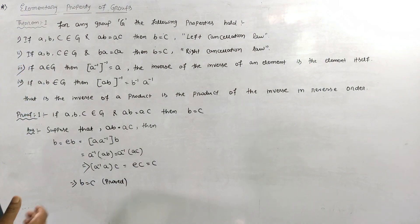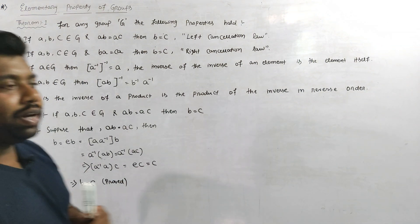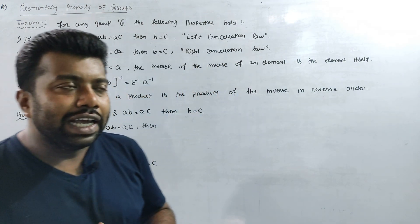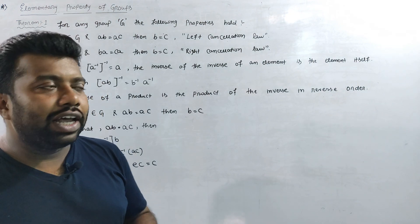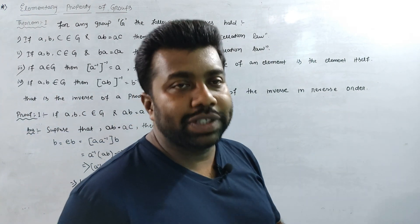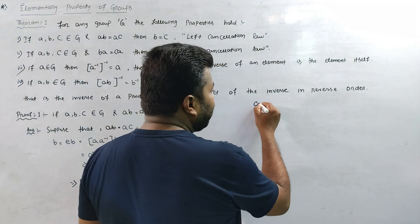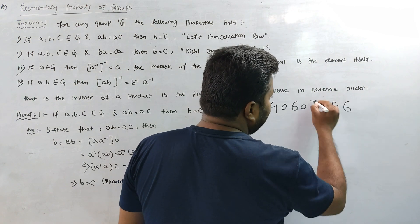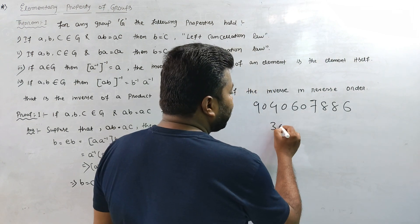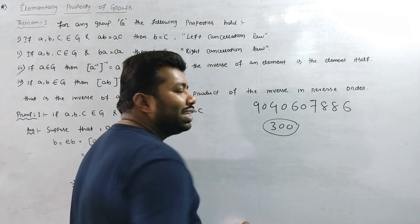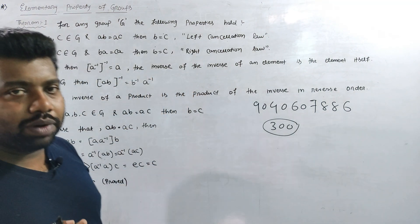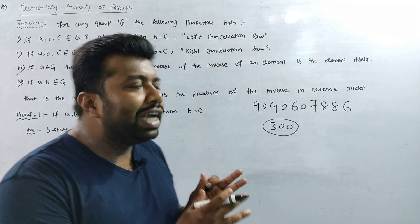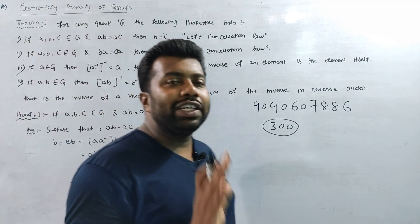When we started the class, we informed that you have completed the complete plus 3. You can contact this number: 90-40-60-7886. The total of each paper is only 300, so the total of 3 papers is only 900. You have complete class notes, selection questions — everything. You have to do some of the questions in the test.